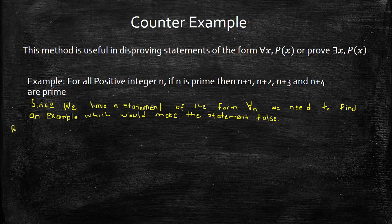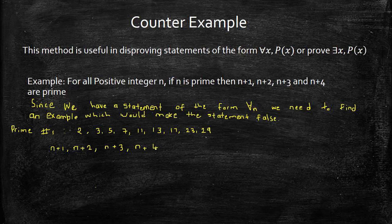Let's go ahead and list our prime numbers from 1 up to 29. We have 2, 3, 5, 7, 11, 13, 17, 23, and 29. We're going to try all these possible values and see which one gives us non-prime numbers.